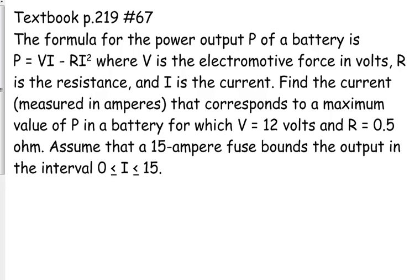They tell us that the formula for the power output P of a battery is given by V times I minus R times I squared, where V is your electromotive force in volts, R is the resistance, and I is the current.